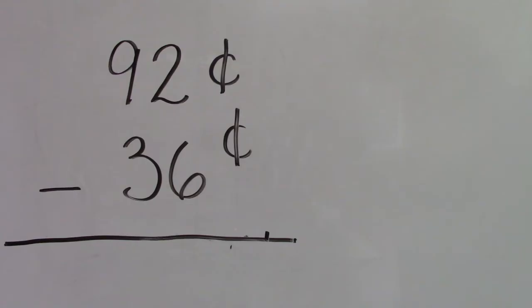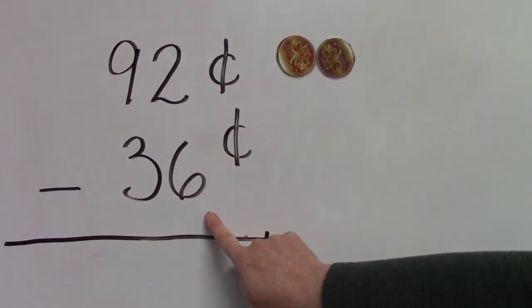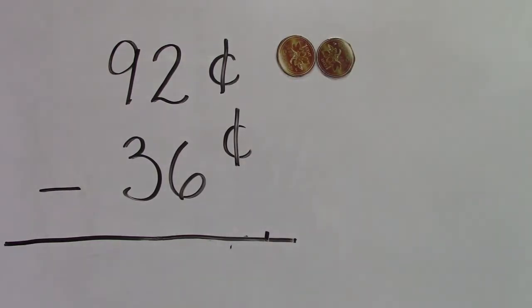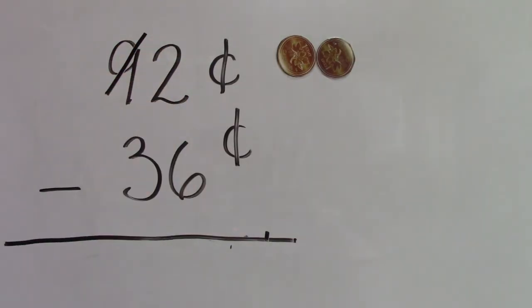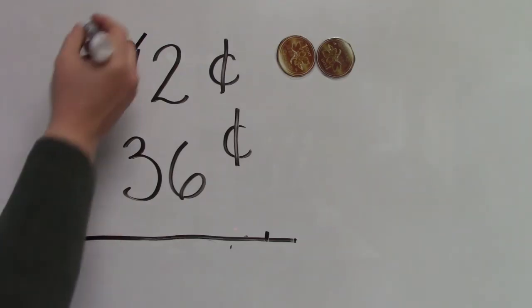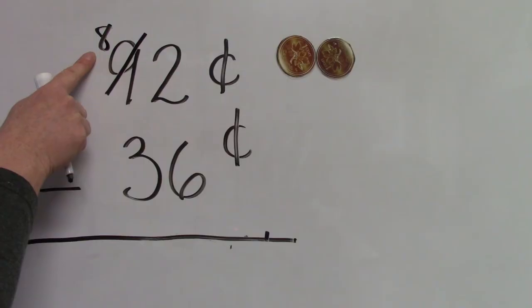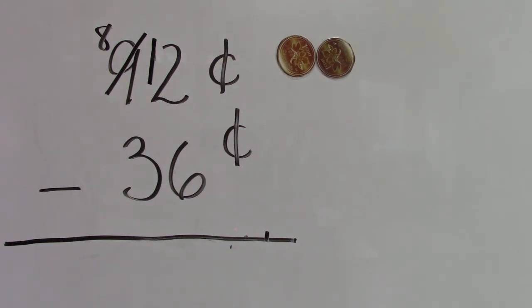Let's look at this question. We have ninety-two cents and we're subtracting thirty-six cents. We're gonna start by looking in our ones place or our pennies place. We only have two pennies but we need to take six away. That is not enough. We have nine dimes. If we traded in one of those dimes for ten more pennies we would have enough. So we're going to trade in one of our dimes. So now we only have eight dimes and we're going to add ten to this two. We're going to make it twelve.